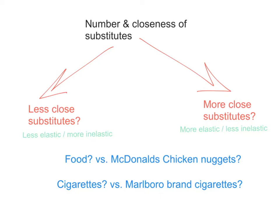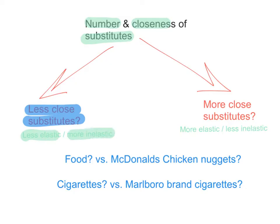The first determinant of price elasticity of demand is the number and closeness of substitutes. Generally, if a product has fewer close substitutes, consumers don't have that much choice, so they will still buy the product even if price rises a little. Demand in that case will be less elastic, or more inelastic. But if a product has more close substitutes and consumers have lots of choice, their demand is likely to be more sensitive to changes in price, because if one product's price rises, consumers can switch to a close substitute, and thus demand will be more elastic.